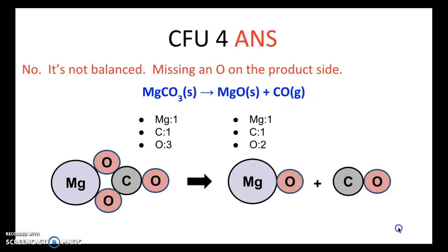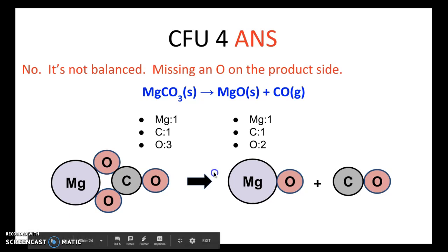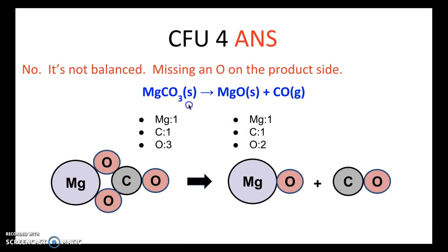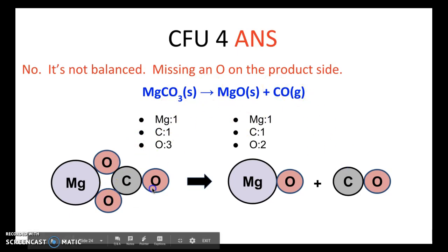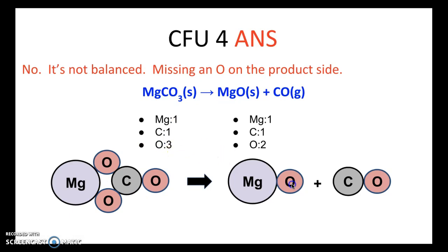No, it is not balanced, because you're missing an O on the product side. Whether using the particle equation or the balanced chemical equation at the top, we notice that we have one Mg on the reactant side and one Mg on the product side — so the Mgs are good. We have one carbon on the reactant side and one carbon on the product side — carbons are good. But for oxygen, we have three oxygens on the reactant side and only two on the product side. So the oxygens are not balanced, and that's why it's not a balanced equation.